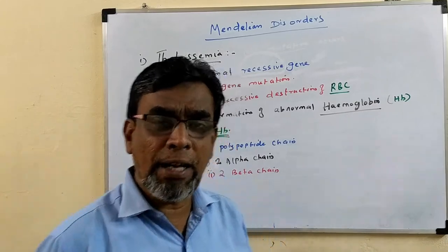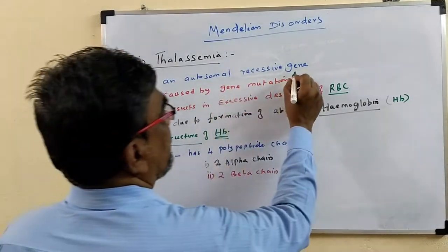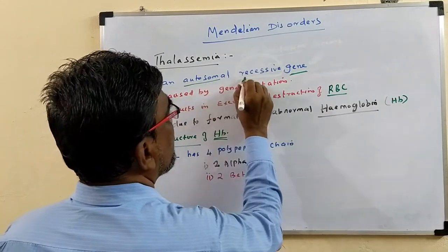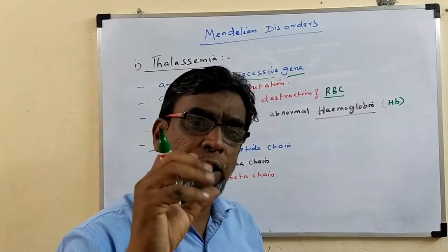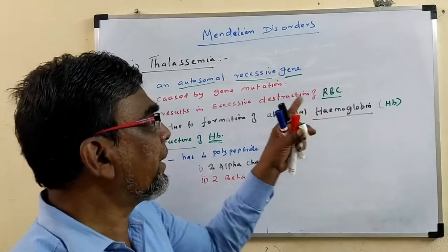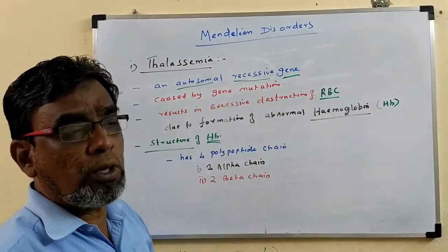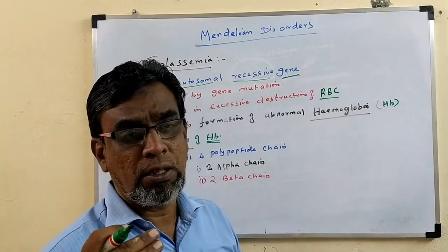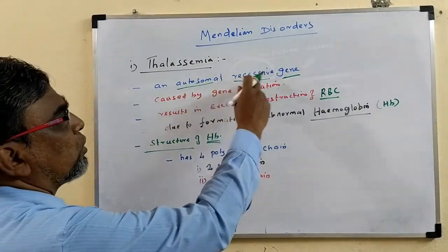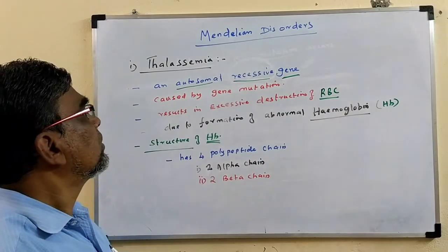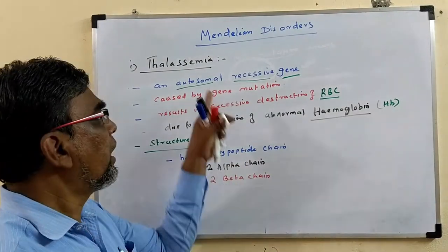Thalassemia is an example of a Mendelian Disorder. This disorder or disease is caused by a gene called an Autosomal Recessive Gene. We know that in our body there are two types of cells: Autosomes and Allosomes. Autosome means body cells; Allosome means sex cells. These genes are present in body cells, so it is called Autosomal Recessive. This gene is a recessive gene present in body cells — that is called Autosome. So it is called an Autosomal Recessive Gene. Thalassemia is caused by an Autosomal Recessive Gene.